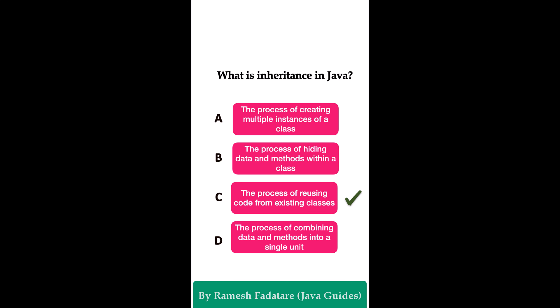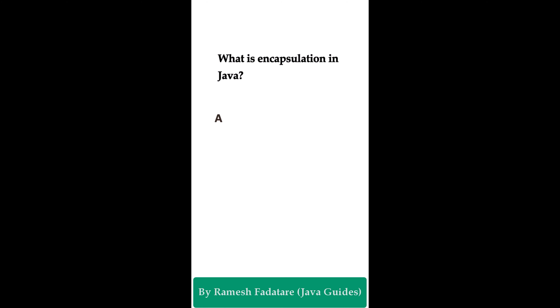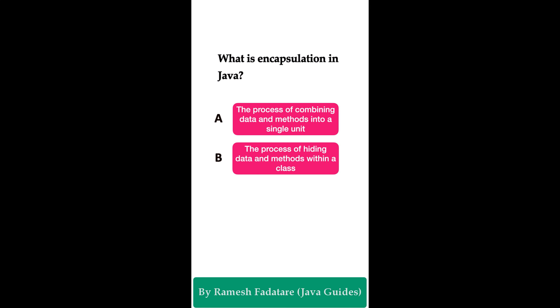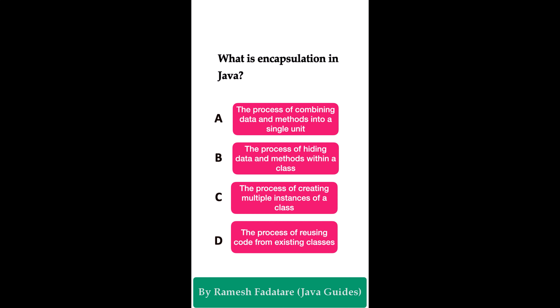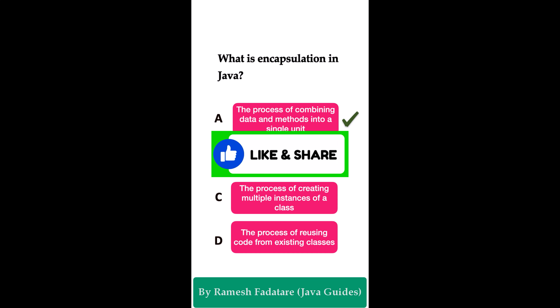What is encapsulation in Java? Option A: the process of combining data and methods into a single unit. Option B: the process of hiding data and methods within a class. Option C: the process of creating multiple instances of a class. Option D: the process of reusing code from existing classes. The correct answer is option A. Encapsulation is one of the four fundamental OOP concepts. The main idea is to bind together the data and the methods that operate on that data into a single unit or class.